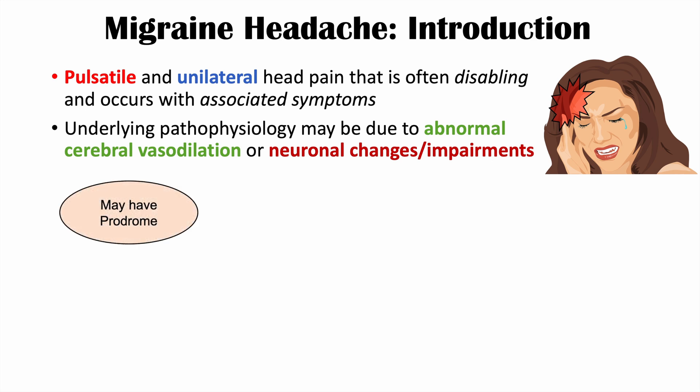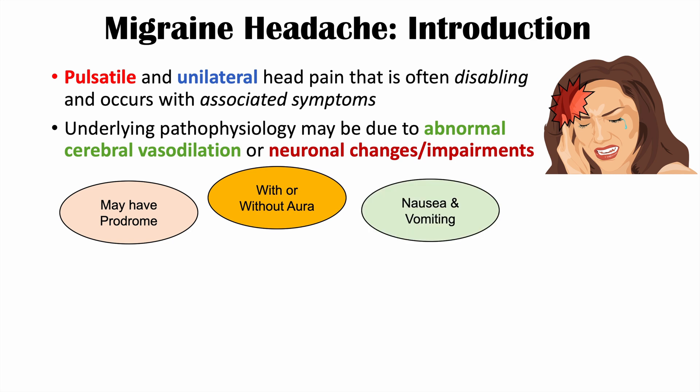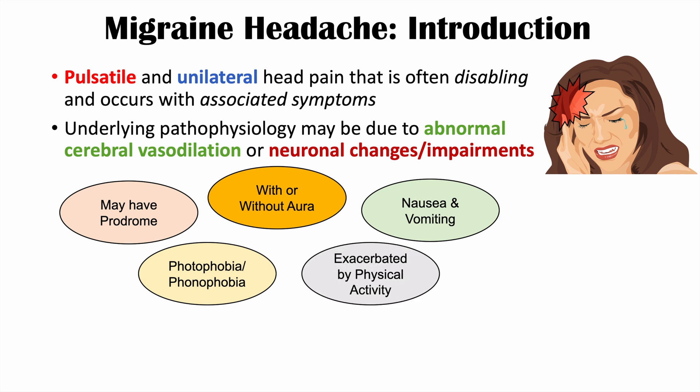Migraine headaches may have a prodrome, which is a time that precedes or comes before the migraine itself. This occurs in a subset of patients — not all patients will have a prodrome. Migraine headaches can occur with or without an aura, and they often have nausea and vomiting associated. There can be photophobia and phonophobia during the prodrome or as part of the aura — photophobia is sensitivity to light and phonophobia is sensitivity to sound. Migraines can be exacerbated by physical activity and made better with rest and being in a dark place.